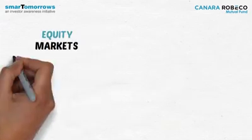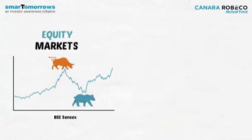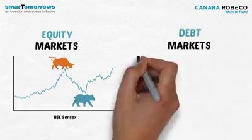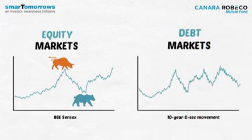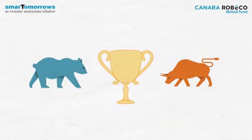The equity market goes through bull phases and bear phases, and phases of volatility. Similarly, debt markets go through their own cycles. Balanced funds use rebalancing to benefit from these cycles.